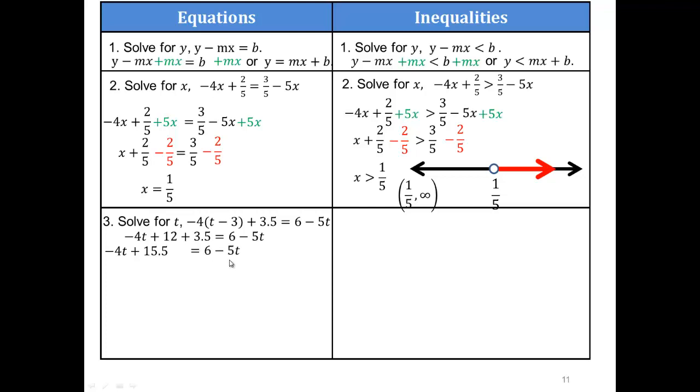What should we do next, do you think? Yep, add 5t. Negative 4t plus 5t will give me t, plus 15 1⁄2 equals 6. Subtract 15 1⁄2 from both sides. So we end up with t equals negative 9 1⁄2.